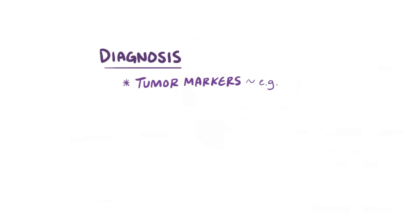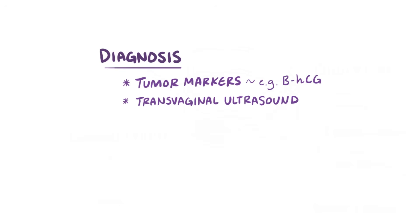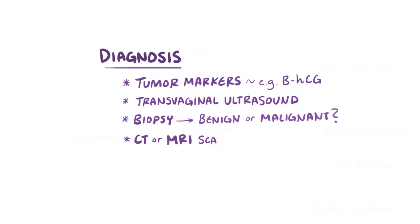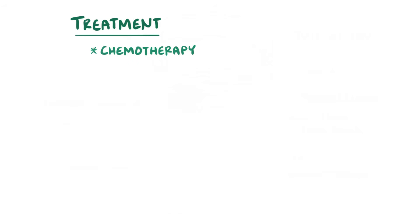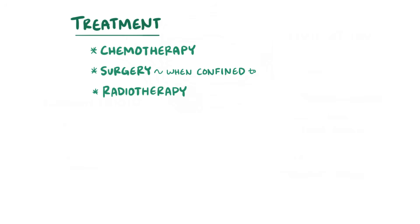Diagnosis of ovarian cancer typically involves looking for specific tumor markers like BHCG, as well as having a transvaginal ultrasound. Tumor biopsies are done to figure out whether a growth is benign or malignant, and imaging with a CT or MRI scan can be done to look for evidence of metastasis. Treatment of ovarian cancer typically involves chemotherapy, surgery, and sometimes radiotherapy. Surgery might be enough for malignant tumors confined to the ovary, whereas chemotherapy might be needed for disease that has spread.